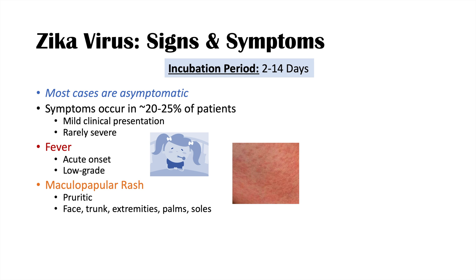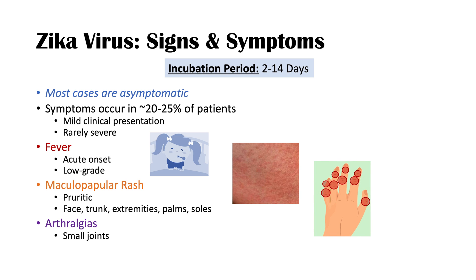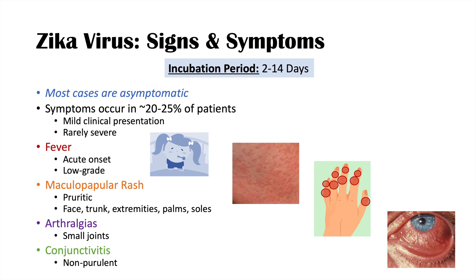The rash can affect the face, trunk, extremities, and the palms and soles. Arthralgias — joint aches and pains — are also common, with a predilection for small joints in the hands and feet. Non-purulent conjunctivitis may also be seen. The predilection for small-joint arthralgias is a distinguishing feature, especially in patients who have traveled to endemic areas.